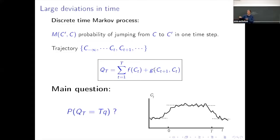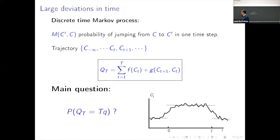Qt is a sum over time T of a function of the configurations, and also a function of two consecutive configurations. For example, you could have in mind that M, the matrix, is just the transition matrix of an exclusion process, C is the configuration of the occupation of the particles, and then F would be a function of the configuration — for example, the density at time t — and G would represent the current, which is when you jump from configuration CT to CT plus one.